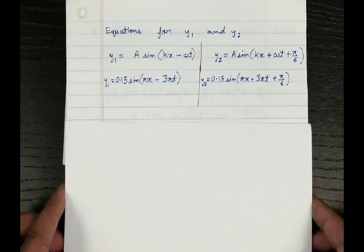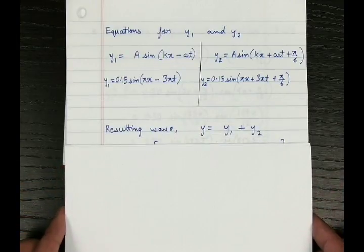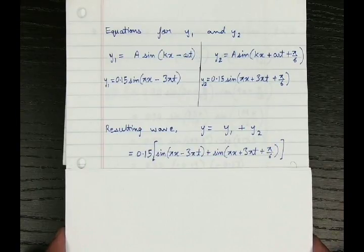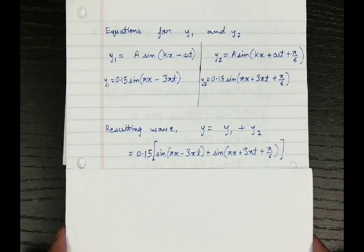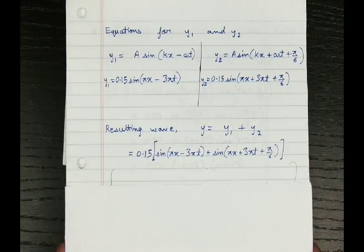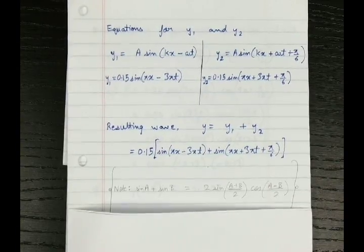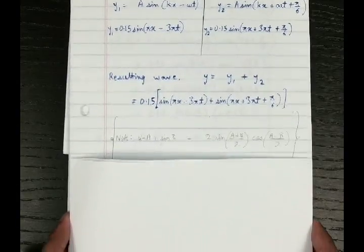Now let's write down the resultant wave, which is simply the addition of the two waves. The resultant is given by sin(pi·x − 3pi·t) plus sin(pi·x + 3pi·t + pi/6). We are adding two sine waves, so we apply the formula sin A + sin B = 2 sin((A+B)/2) cos((A−B)/2).